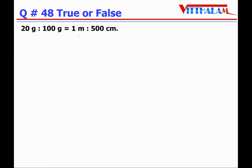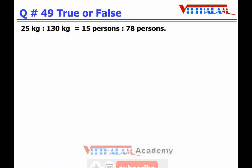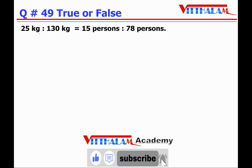Question 48: 20 grams to 100 grams equals 1 meter to 500 centimeters — True. Here the units are the same so 20:100. For 1 meter to 500 cm, convert 1 meter to 100 centimeters, giving 100:500, which simplifies to 1:5. And 20:100 also simplifies to 1:5. They are the same, so it is True.